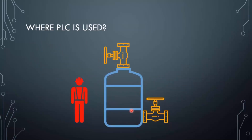So where is PLC used? Suppose in a factory there is a water tank and a worker wants to fill this tank. What he will do simply is turn on the inlet valve of the tank to fill it, and if he wants to empty the tank, he simply turns on the outlet valve and the whole water will be drained out.